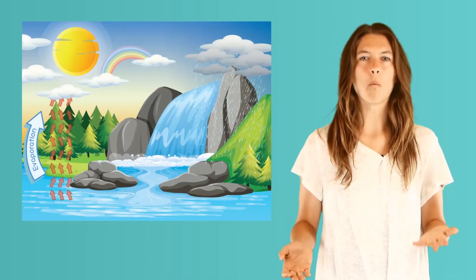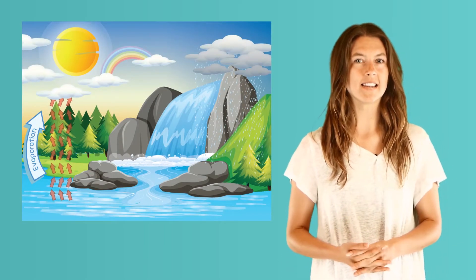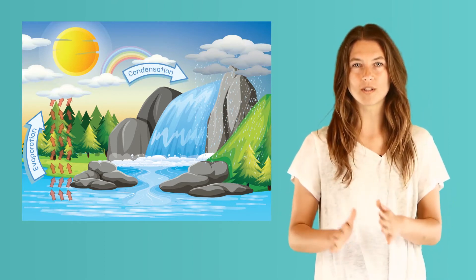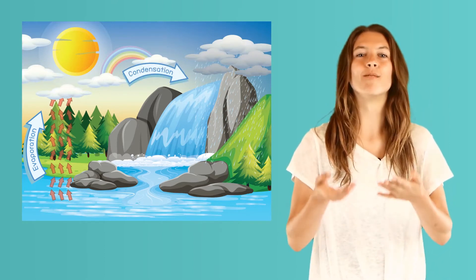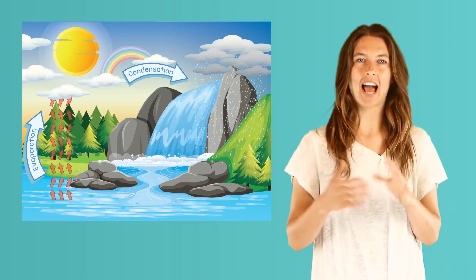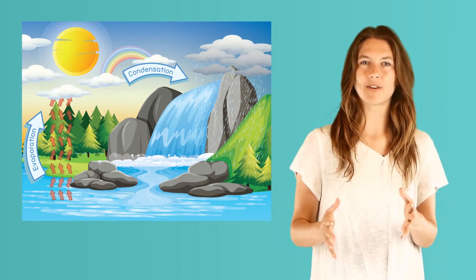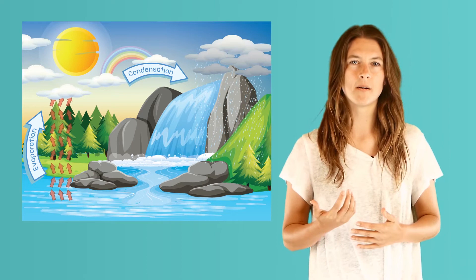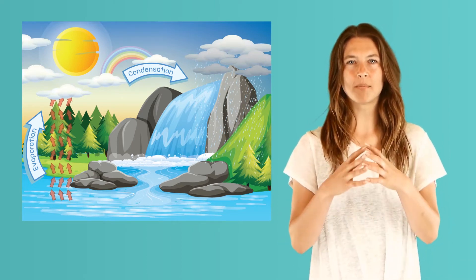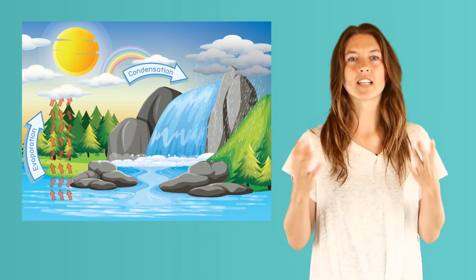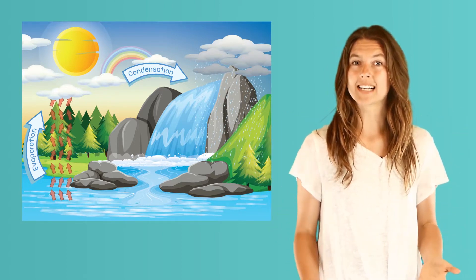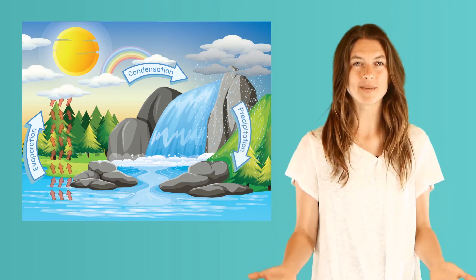Do you know what water vapor becomes once it's in the atmosphere? Yes! When water vapor cools and condenses, it becomes a cloud! Condensation happens when the water vapor becomes liquid again and forms clouds. When too much water has condensed or turned into liquid droplets, the clouds become very heavy. That's when water falls back down to the ground, called precipitation.